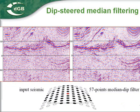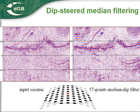Dipsteered filtering, also known as structurally-oriented filtering, is a data-adaptive form of filtering in which the filters are applied along the orientation of the seismic events. At every position in the cube, the amplitudes are extracted in a circle along a virtual horizon that is constructed by tracking the local dip and azimuth. In a dipsteered median filter, the amplitude in the center is replaced by the median value of the amplitudes in the extraction circle.